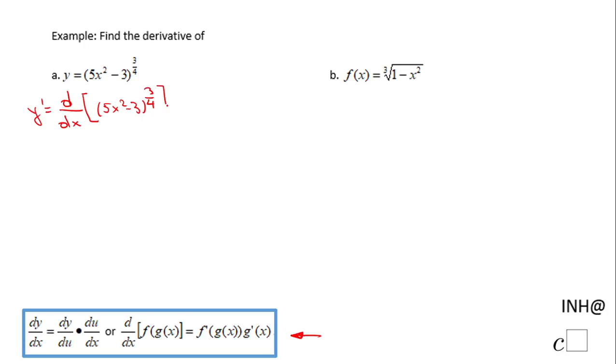You already notice I said the power of 3 over 4 or 3 fourths. That means I'm going to use what is called the power rule first here. I'm going to have 3/4, that power goes up front, and then I have (5x² - 3) to the power of 3/4 - 1.